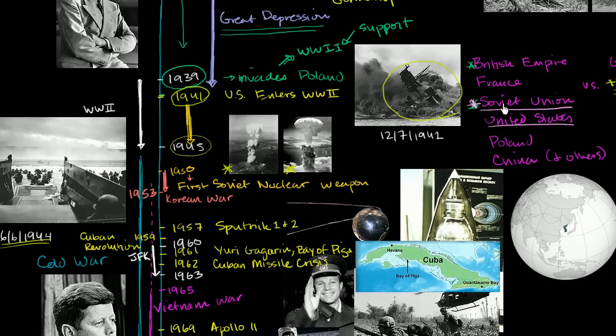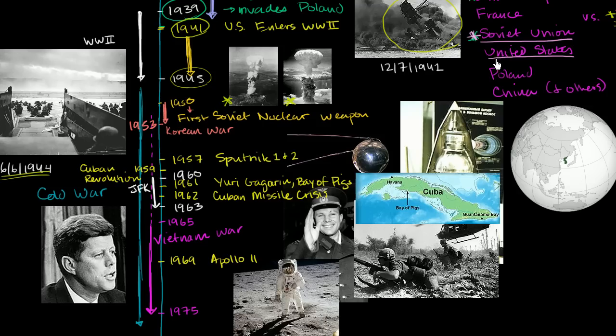When I say communist, I'm talking about no private wealth — the state really owned all resources. The United States, on the other hand, was hugely capitalist, and you could imagine many people in the United States did not want any of this communism coming to them. So you have this major conflict that never really erupts into direct conflict between the Soviet Union and the United States — it's always done through proxies. It's called the Cold War because it wasn't a hot war; the US and Soviet Union never really fired bullets at each other. Instead, they supported other parties to fight on their behalf.